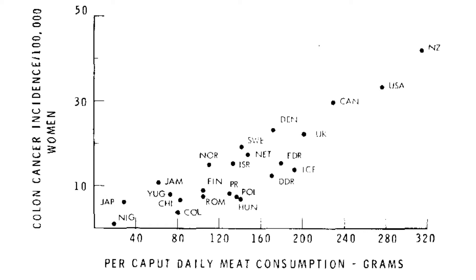So at the country level, if there is an increase in per head meat consumption, there will be an increase in colon cancer among women. For example, if you look at New Zealand, which is on the top right end, the per capita daily meat consumption was 320 grams, the highest among the countries, and it also showed the highest incidence of colon cancer among women.